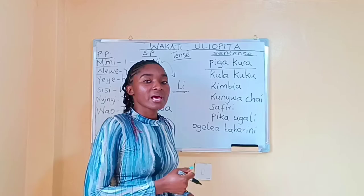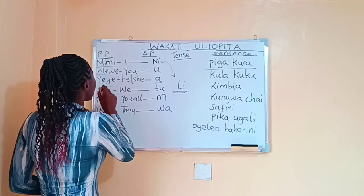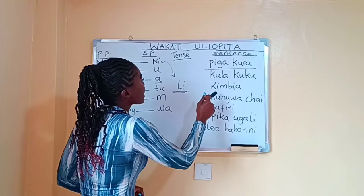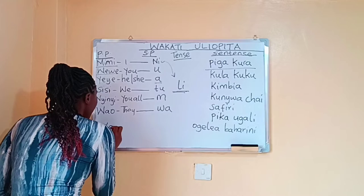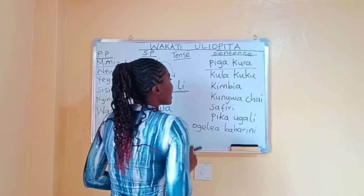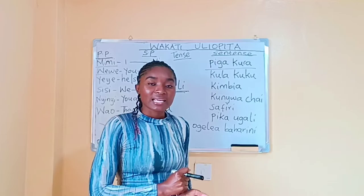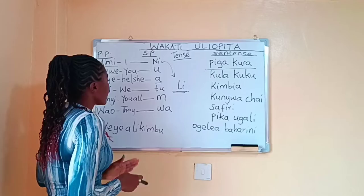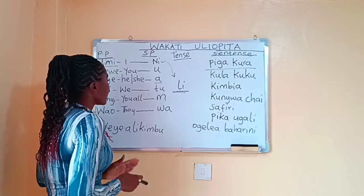The next one is 'yeye.' Remember, when you are referring to he or she — yeye, he or she — represented by 'a.' So we have yeye, a. Our tense marker gives us 'yeye, ali.' Our sentence is: Yeye, ali, kimbia. The verb 'kimbia' translates to 'ran.' So yeye, ali, kimbia means 'he ran' or 'she ran.'